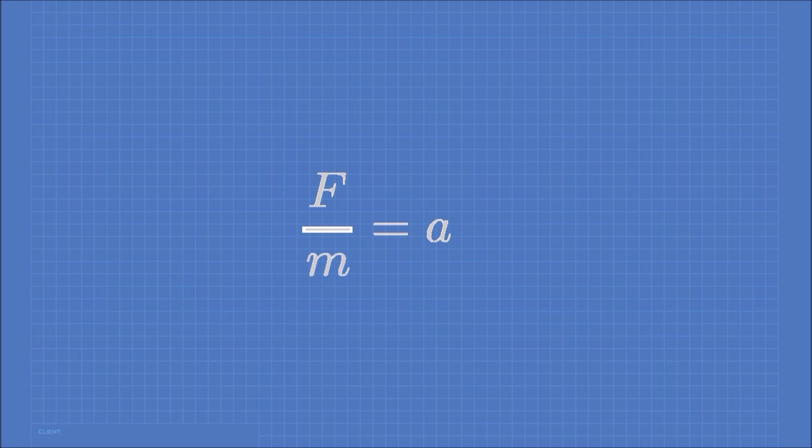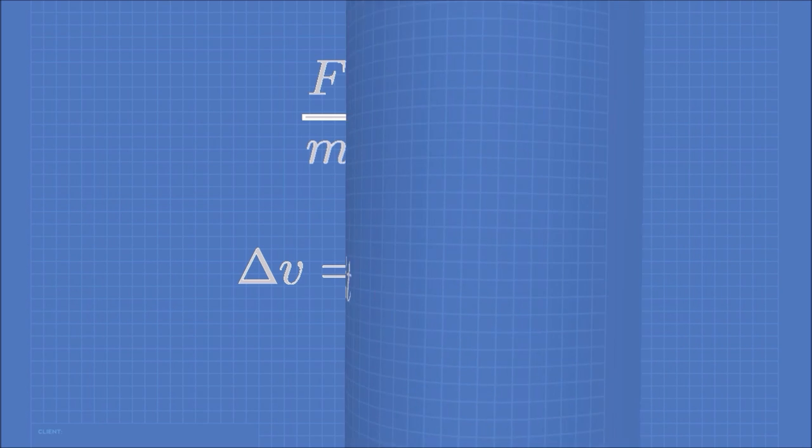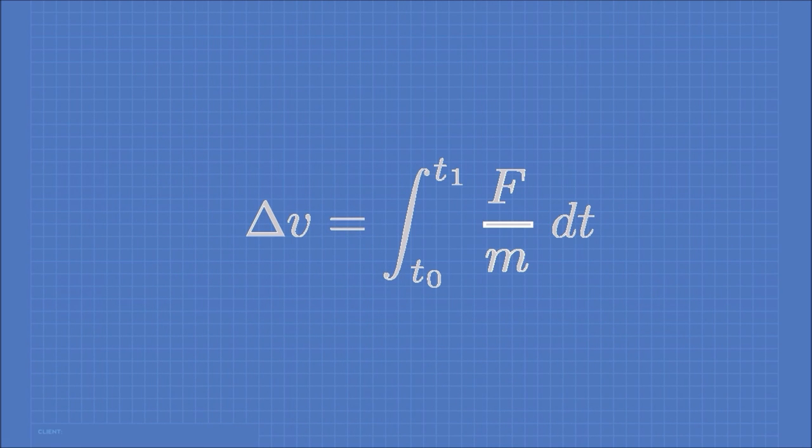Let's move the mass to the other side. We also know that acceleration is the derivative, or rate of change, of velocity. Therefore, velocity is also the antiderivative of acceleration. With a little substitution, we should get this equation.